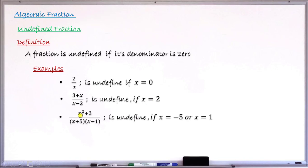Similarly, you have another fraction (x squared plus 3) all over (x plus 5) times (x minus 1). This fraction will be undefined if x takes either minus five or positive one. If x is minus five, you get minus five plus five in the first bracket, which is zero. Zero times whatever the second bracket is makes the entire denominator zero, so the fraction is undefined. Similarly, if x equals one, the second bracket gives one minus one, which is zero, making the entire denominator zero and the fraction undefined.